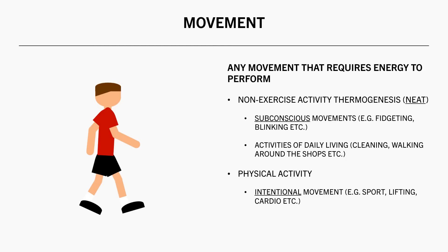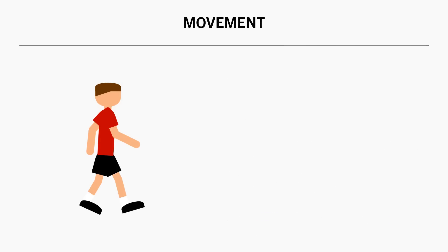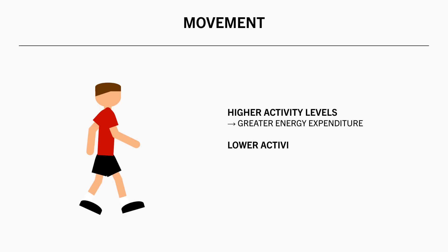Although whether movement is classified as NEAT or physical activity isn't really important as it relates to energy expenditure. The simplest and most practical way to quantify total activity levels is to use step counts. While it isn't perfect, it will provide an overall decent indicator of your activity levels including both NEAT and intentional exercise. The energy we expend via movement can be highly variable depending on how active we are.